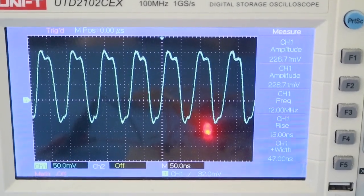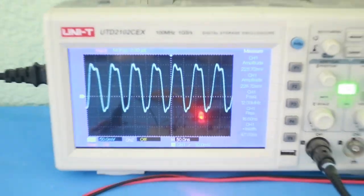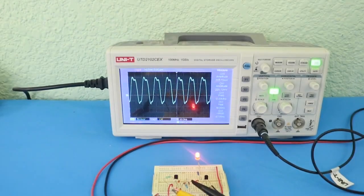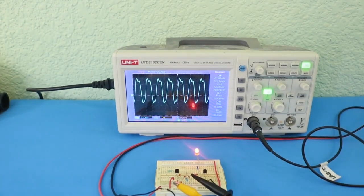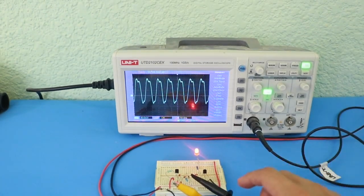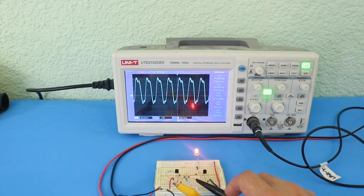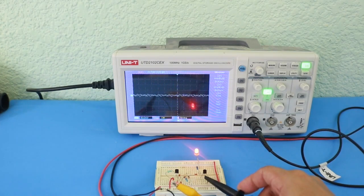So that tells us that the crystal produces a very, very precise frequency output. And now, if I move the test point of the oscilloscope to the base of the second transistor,